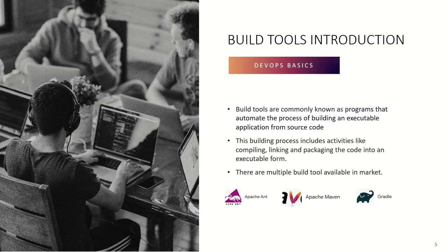Build tools are programs that automate the process of building an executable application from source code. Source code is present on GitHub, and after performing testing and packaging, an executable product comes to us which we deploy on a server. We cannot directly deploy raw source code to a server. The build process includes compiling, linking, and packaging code into an executable form. Available build tools include Apache Maven, Apache Ant, and Gradle. In today's example we'll use Maven.